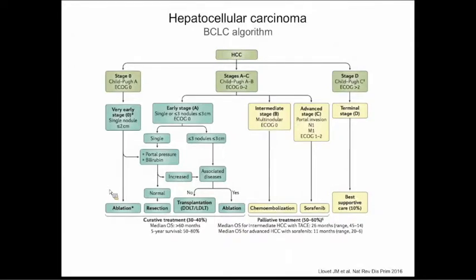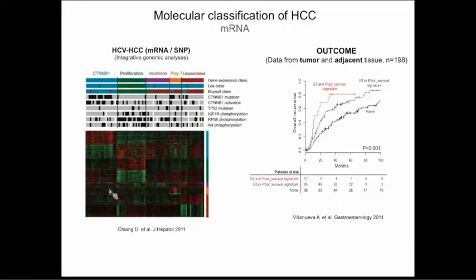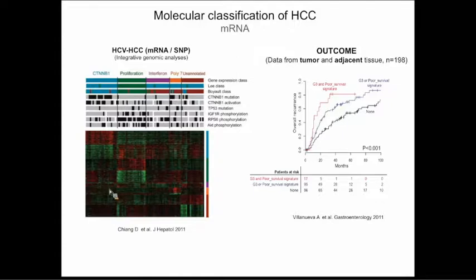In a practical scenario, the BCLC algorithm classifies HCC — hepatocellular carcinoma — patients into different stages and allocates treatment based on those stages. Stages are allocated based on the number and size of tumor nodules and patient symptoms, all clinical parameters assessable by radiology. However, we and others have demonstrated that tumors, despite being in the same clinical stage, are very different at the molecular level. A study in Cancer Research 2008 showed that resected hepatitis C-related HCC patients can be classified by gene expression into different classes, and these classes correlate with outcome — none of which is currently incorporated into HCC management.